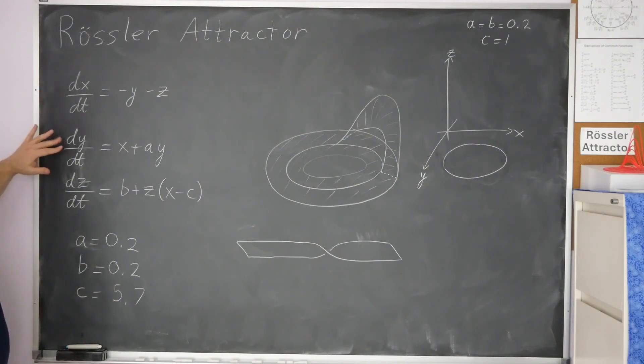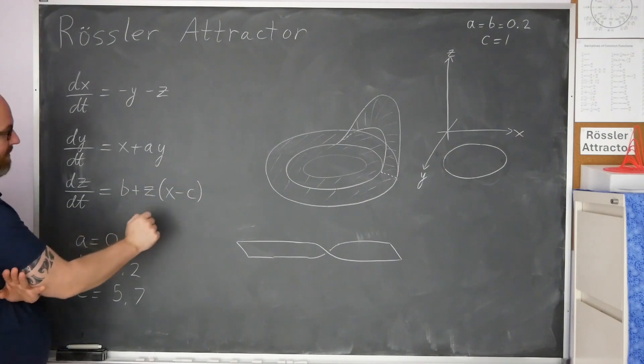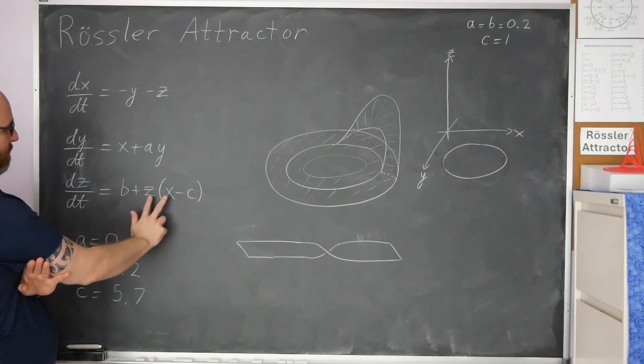So dx/dt, dy/dt, those are linear. The nonlinear one is dz/dt. So that's b plus z times x minus c. The z times the x, that's going to be the nonlinear bit.